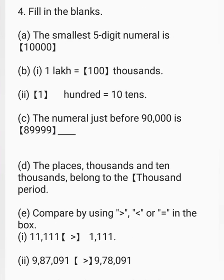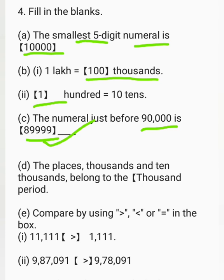Fill in the blanks. The smallest five-digit numeral is 10,000. One lakh equals one hundred thousand. One hundred equals ten tens. The numeral just before 90,000: 90,000 minus 1 equals 89,999. The places thousands and ten-thousands belong to the thousands period.